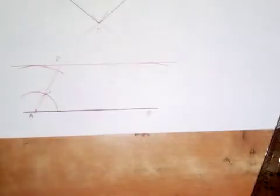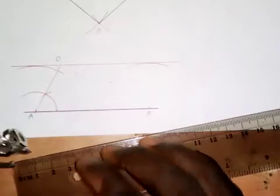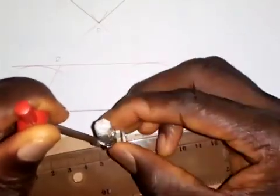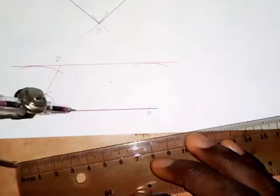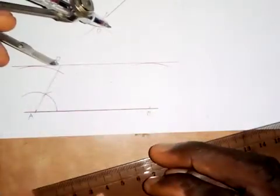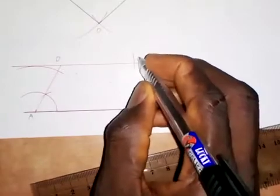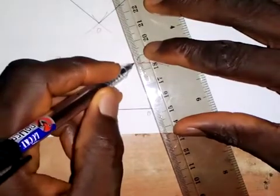Next, for the length of the other side, I'll be using 45 millimeters. So I take a measurement of 45 millimeters. I'll put the pin point at D and make an arc here like this. This intersection point is point C. Then I'm going to join B and C together like this.